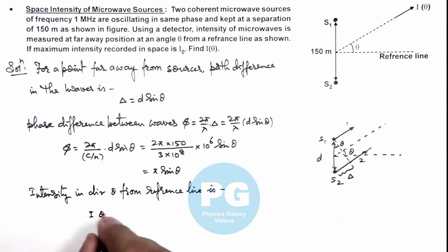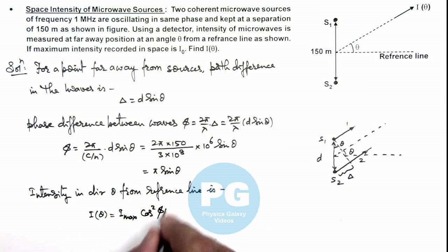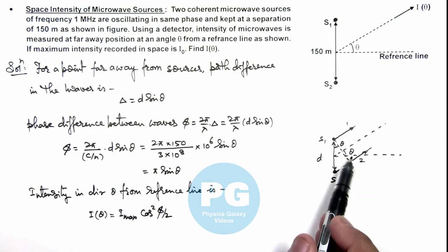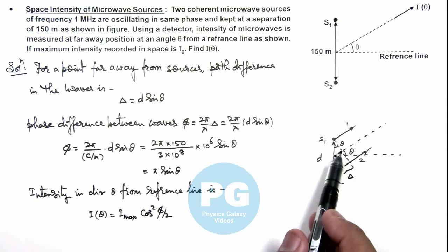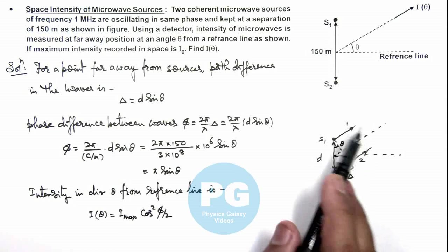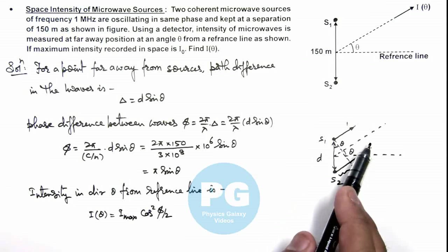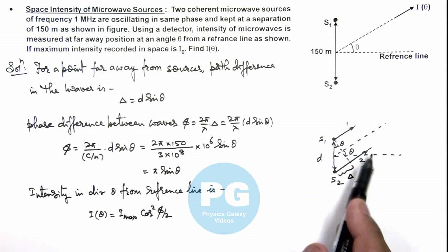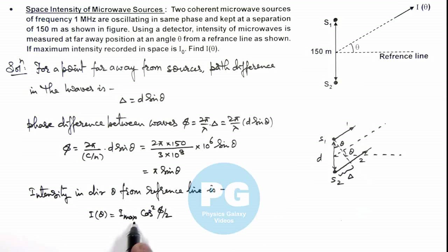This I(θ) we can write as I_max cos²(φ/2), as if the two waves are having equal intensities, then intensity at the point of constructive interference for the two waves can be written as 4 times individual intensities which is I_max.